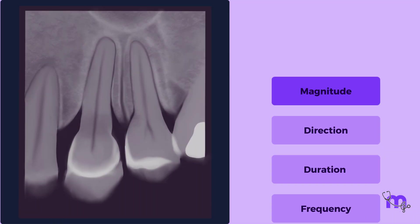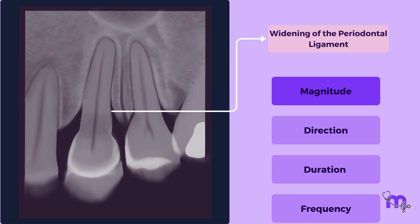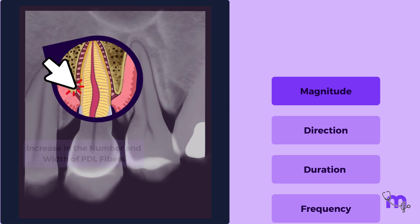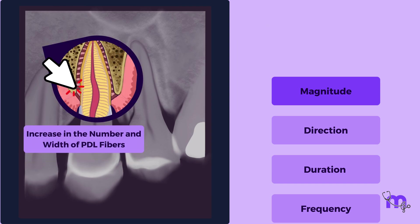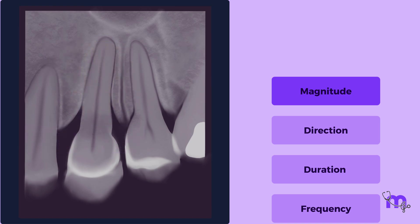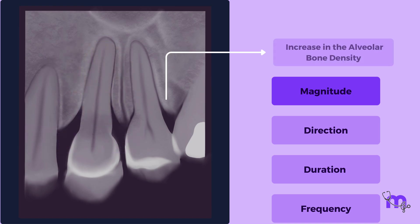An increase in the magnitude of occlusal forces leads to widening of the periodontal ligament due to an increase in the number and width of PDL fibers. There may also be an increase in the alveolar bone density.